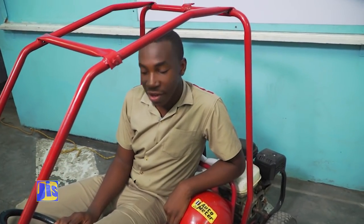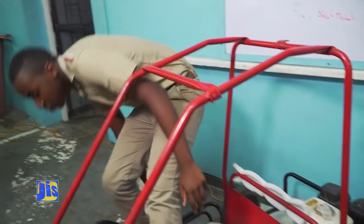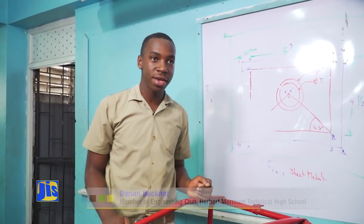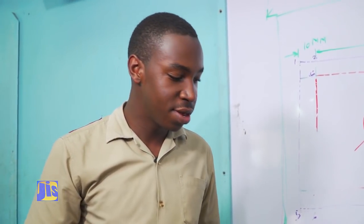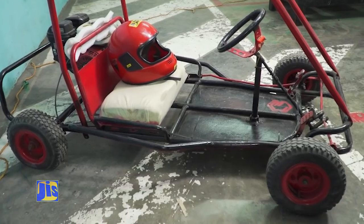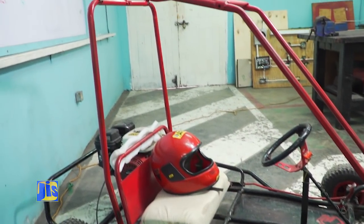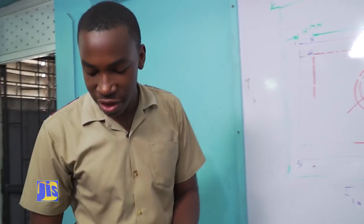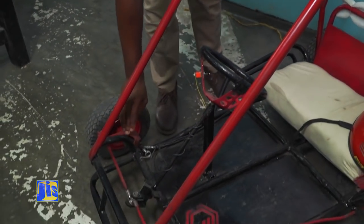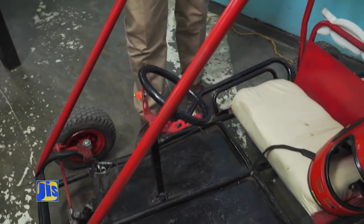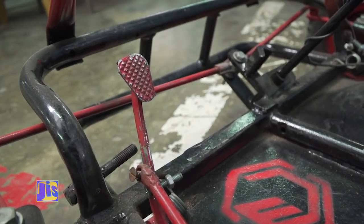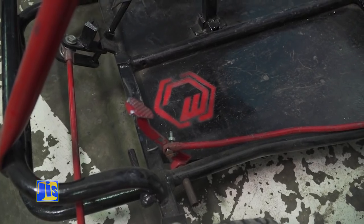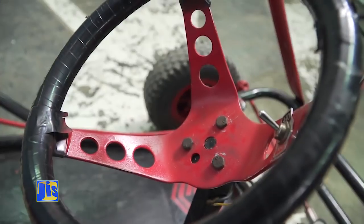Here we have the Herbie Go-Kart. It was a project that was started a couple years back by other students of the engineering club, but wasn't finished because of financial strains. So I and others finished the go-kart as best as possible. We have here the gas pedal, which accelerates the vehicle when we apply pressure on the pedal. Then we have the brake pedal, which is used to apply friction to the wheels, which slows down the cart.